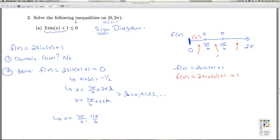To pick a number between 7π/6 and 11π/6, we can choose 3π/2. I can plug that into the function. That's going to give me -1 times 2 plus 1 gives me -1, so I'm negative on that interval.